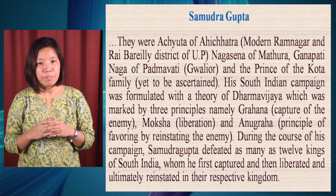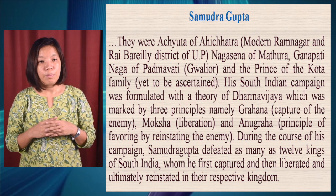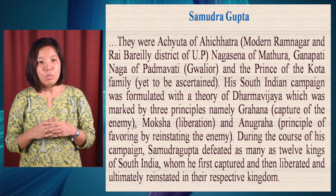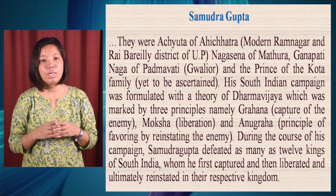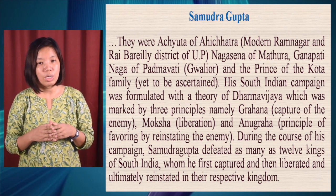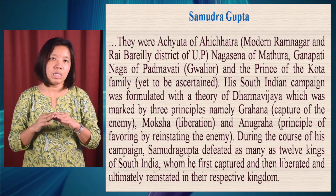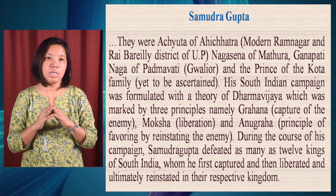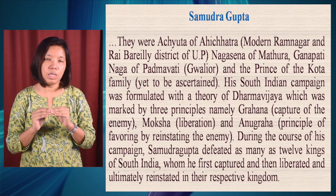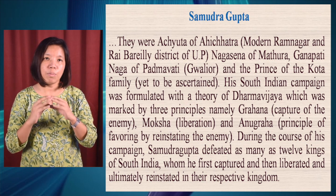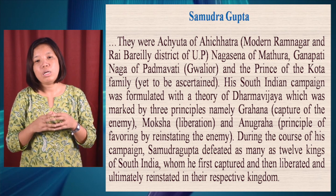These defeated kings were Achyuta of Ahichatra, Nagasena of Mathura, the prince of the Kota family, and Ganapati Naga of Padmavata. His South Indian campaign was formulated with a theory of Dharma Vijaya, marked by three principles: Grahana, which is the capture of the army; Moksha, liberation; and Anugraha, the principle of favoring by reinstating the enemy. This policy is seen throughout his campaign, as his interest was more on submission and paying of tributes rather than bringing the entire territory under his control.